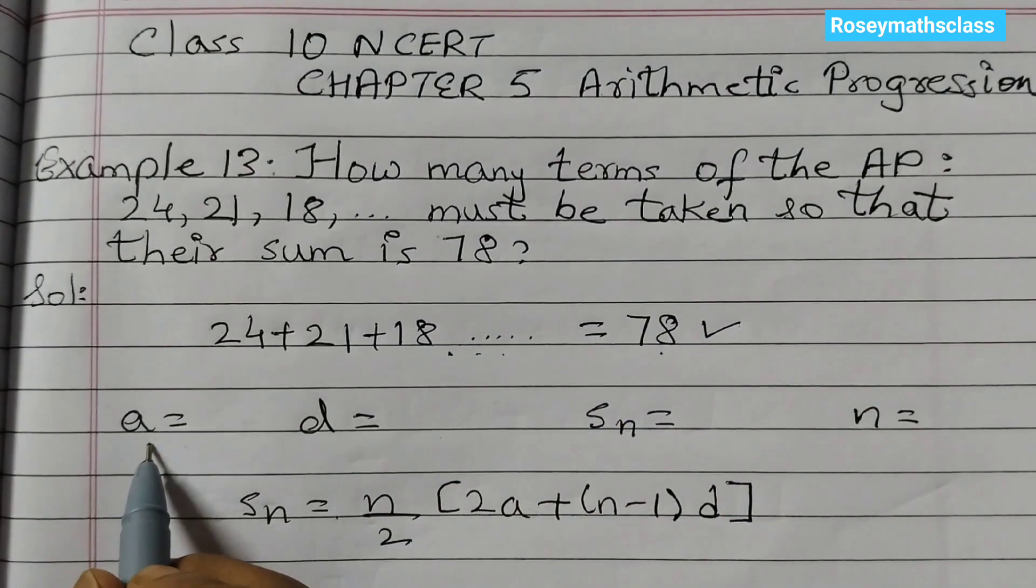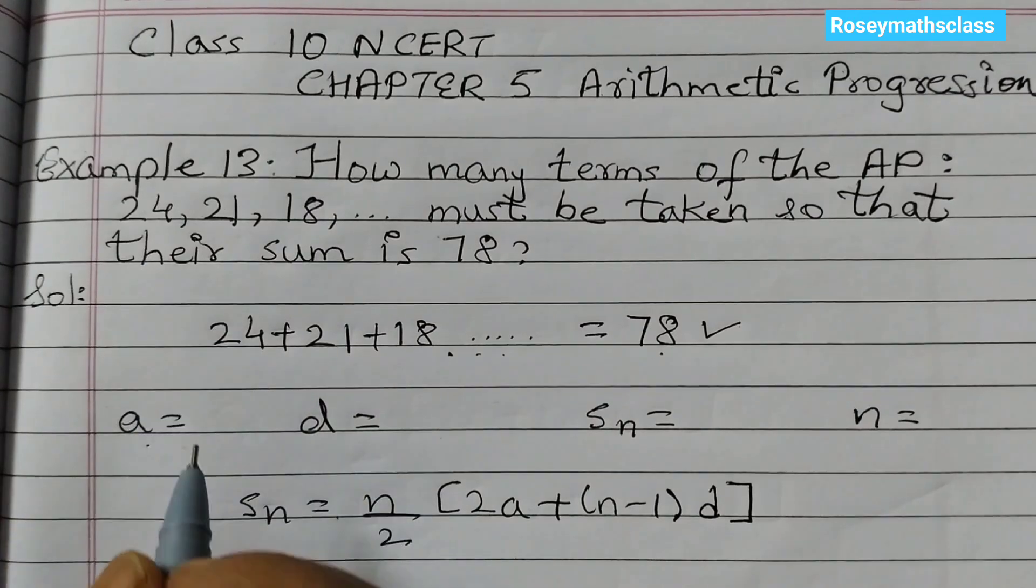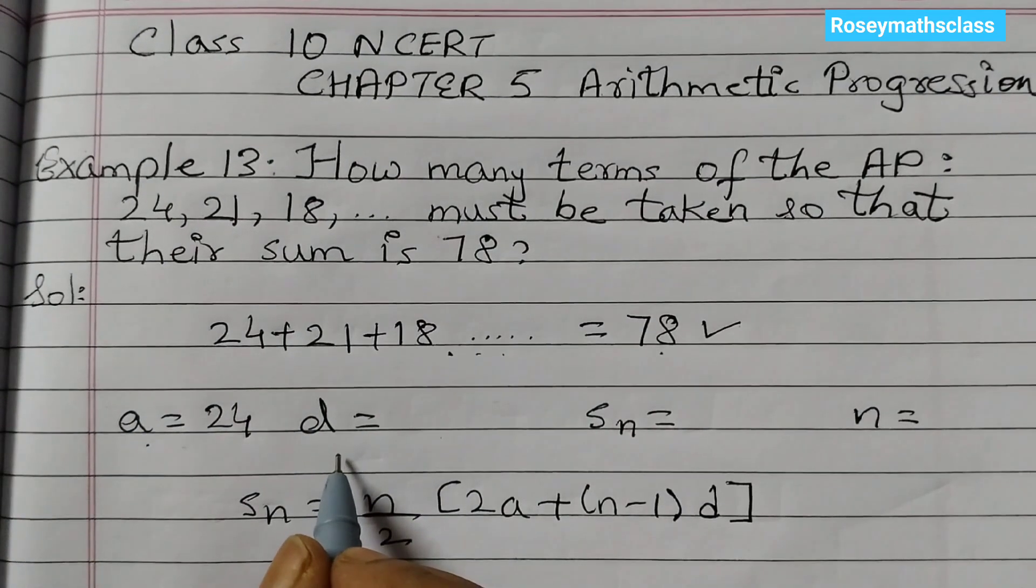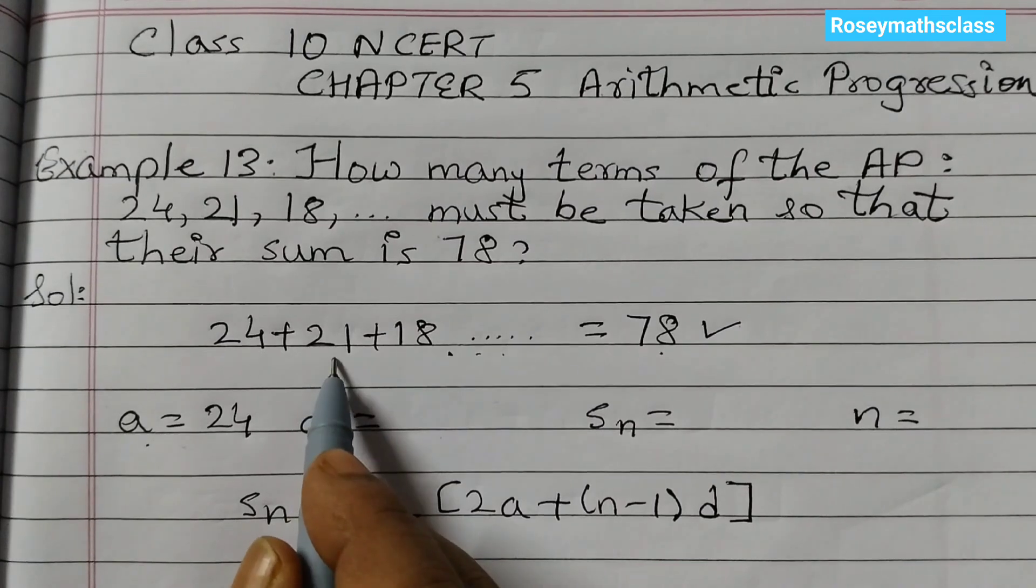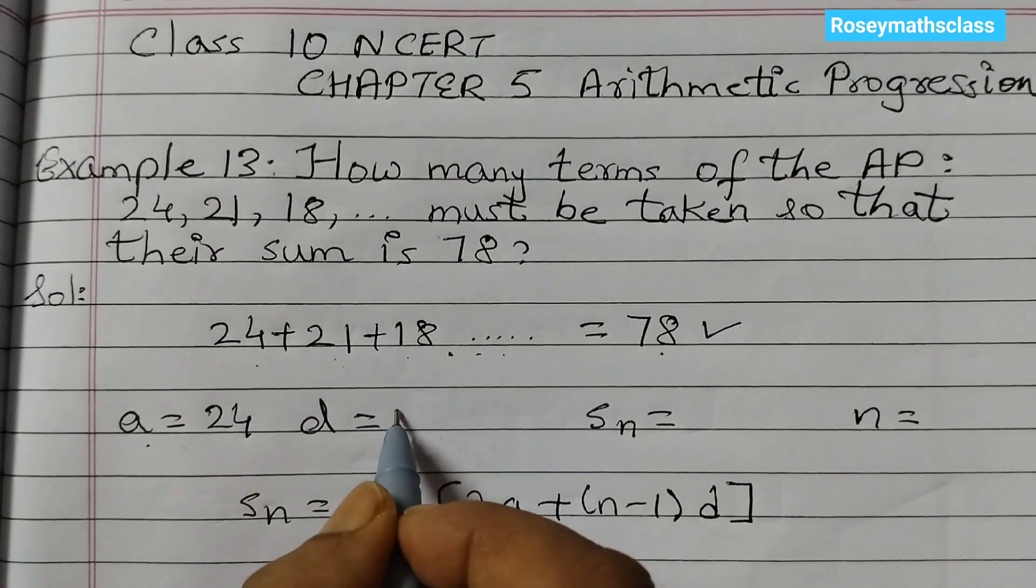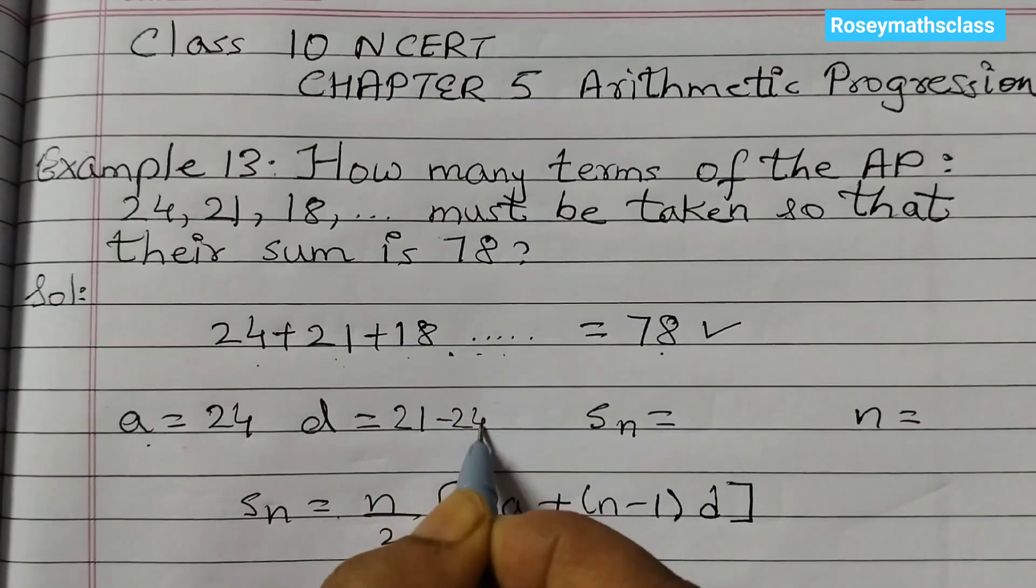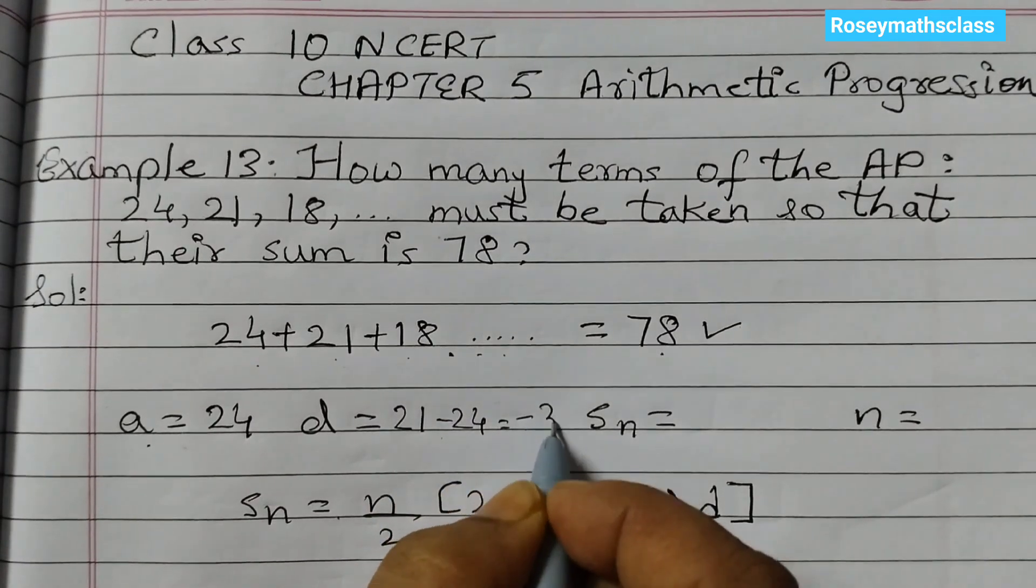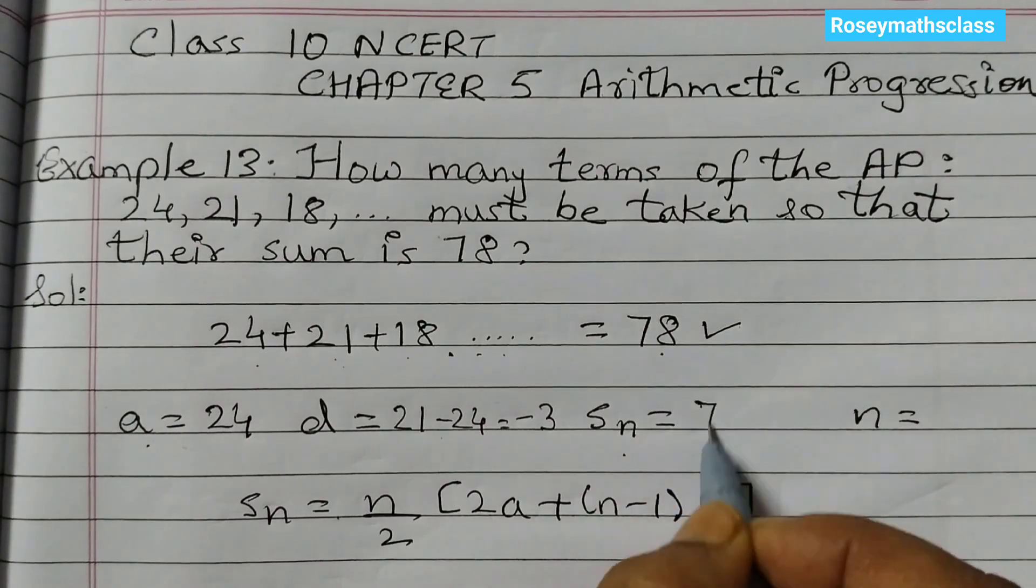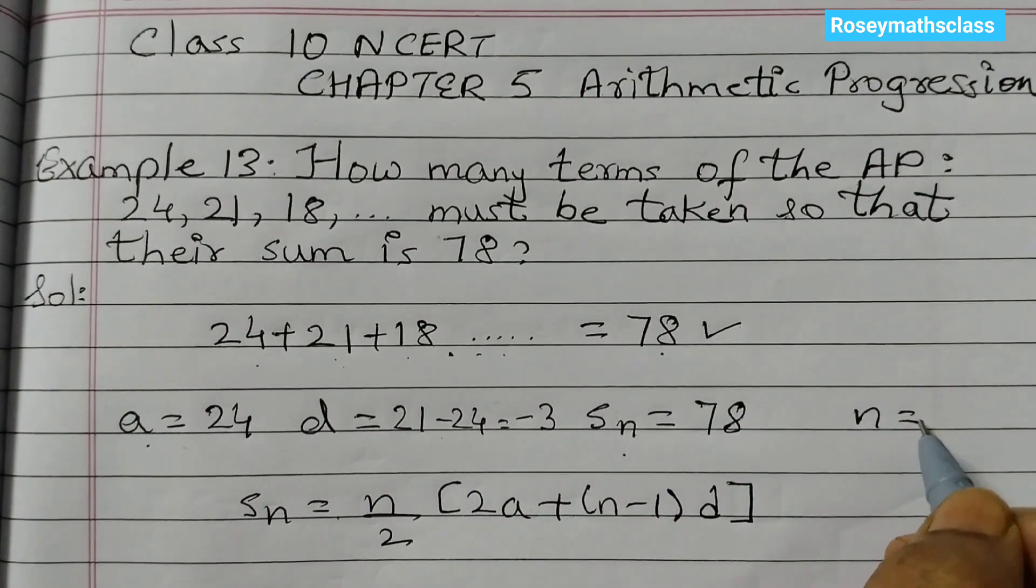So what is given? The first term A is given as 24. The common difference D we can find out by subtracting 21 minus 24 or 18 minus 21 whichever you want. And that is equal to minus 3. The sum is given as 78. We need to find out the number of terms.